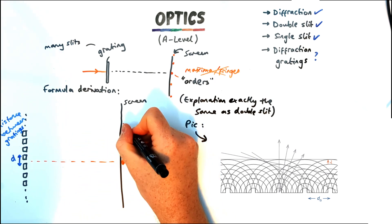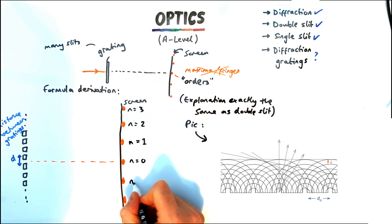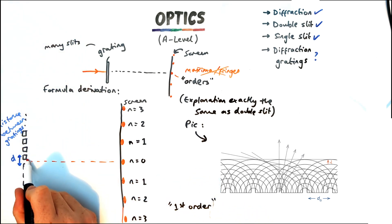And on the screen we've got these things which we said were called orders. Now the bright spots are orders and the central one is the zeroth order then going up and down from that you've got n equals one the first order, second order, third order etc.